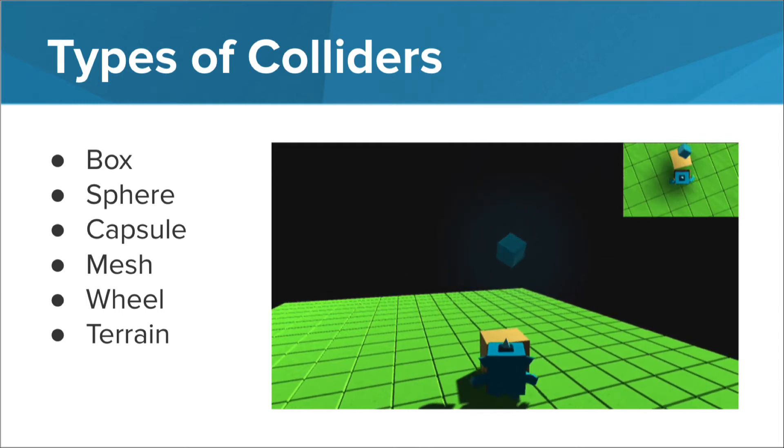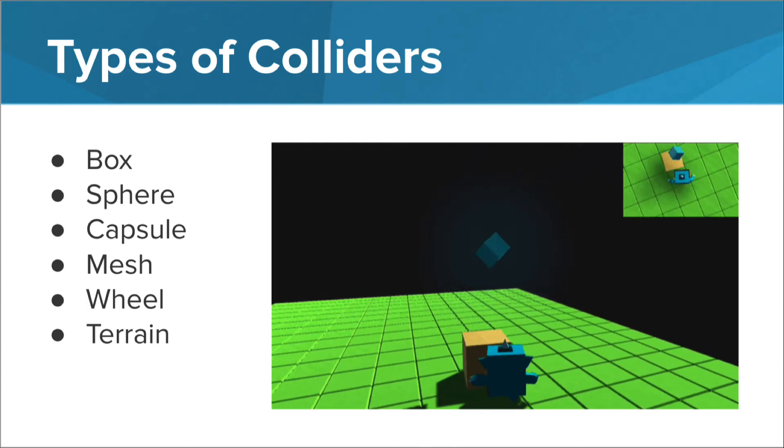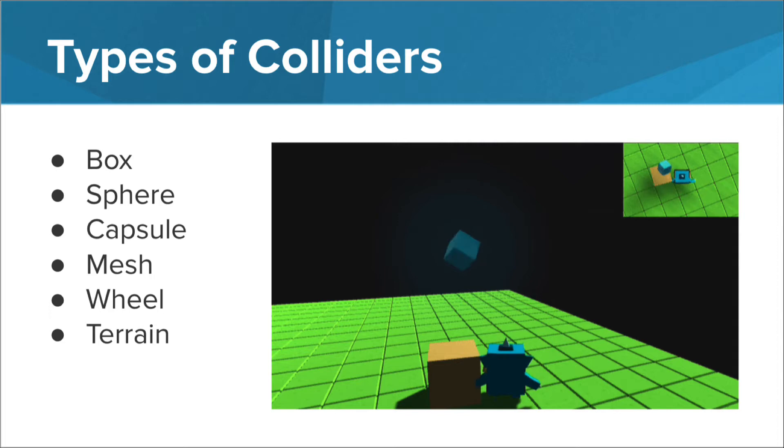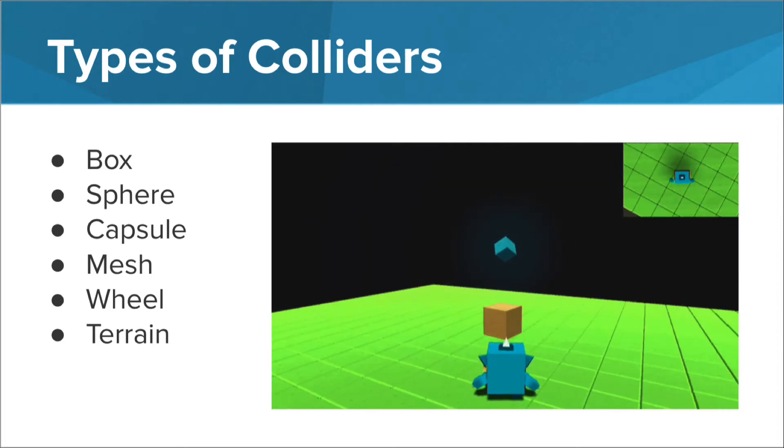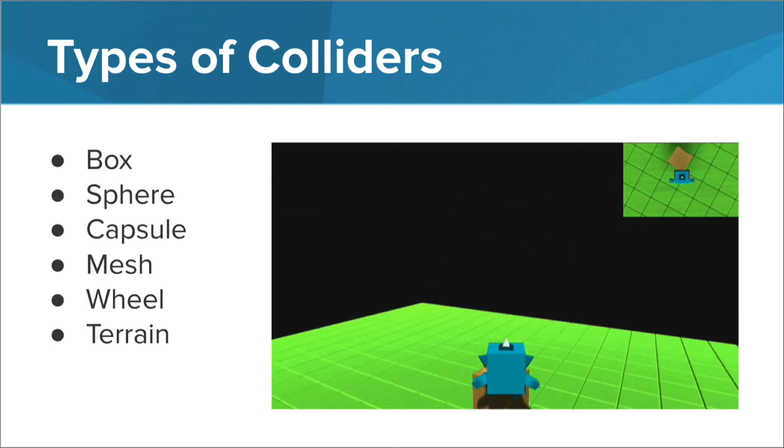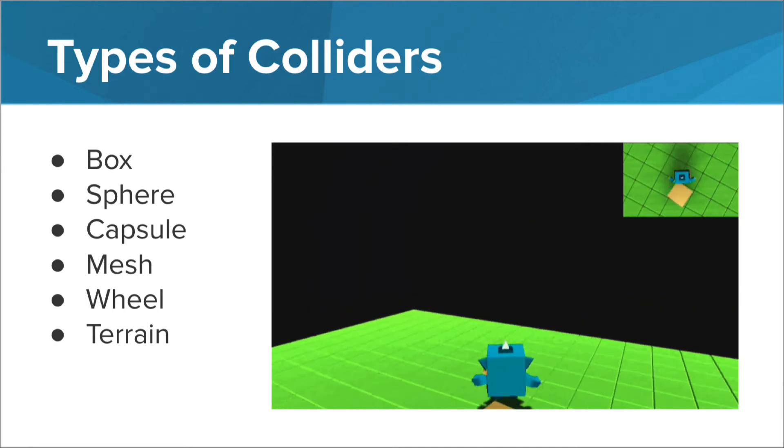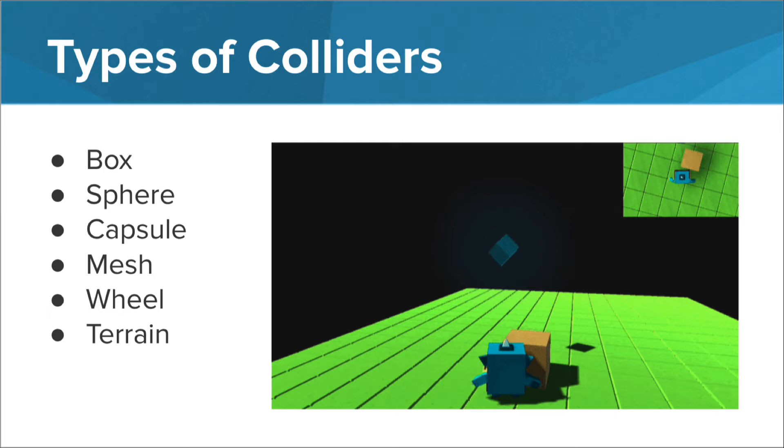Sphere colliders are good for spheres and spherical shaped characters. Capsule colliders are good for oblong game objects. Capsule colliders are also included in character controllers. More on that in a later lesson.